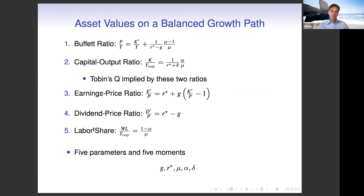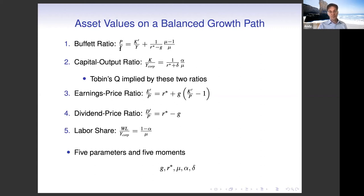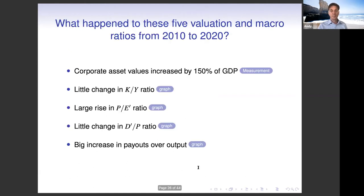We have five moments and five parameters to match. The moments are: the price-earnings ratio, the dividend yield, the Buffett ratio, the capital-output ratio, and the labor share. You can just go ahead and match the model to the data.